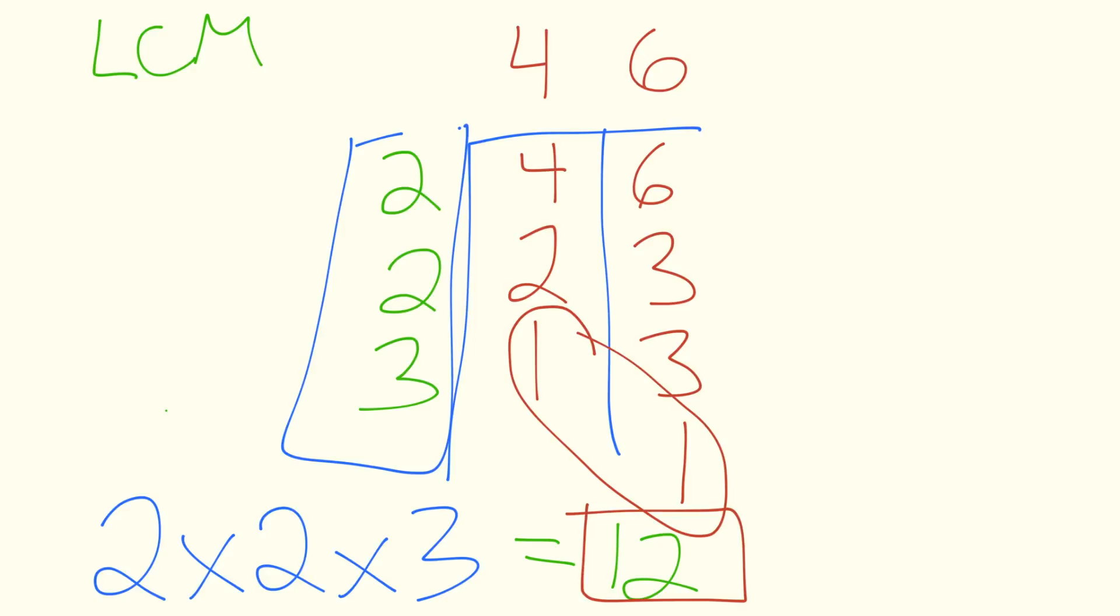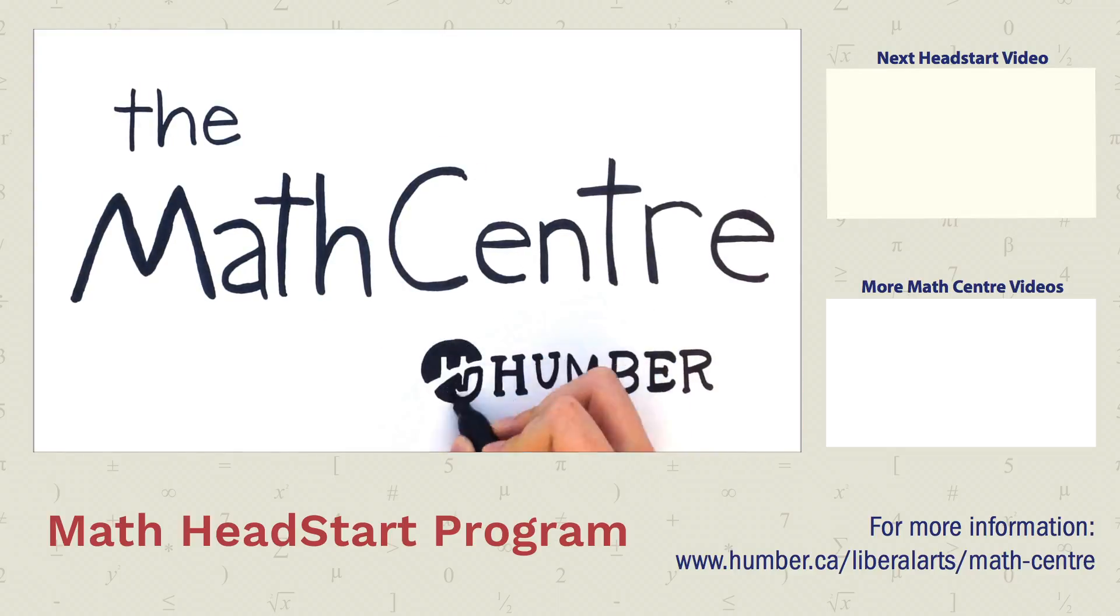So this is a technique that you can use to find the LCM, which is going to come in useful when you do addition of fractions where you need to find a lowest common denominator. The example we're going to do specifically today is 3 quarters plus 5 sixths. Now when it comes to adding fractions, you can't simply add the top.